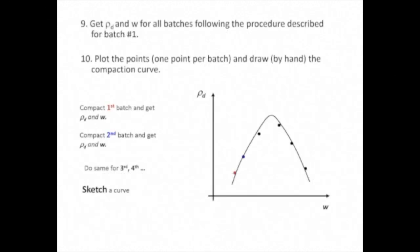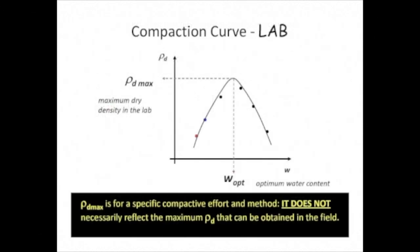We must perform the compaction procedure for all batches prepared. Thus, if we have 6 batches, we will end up with 6 points with known coordinates: water content and dry density. We then create the compaction curve by plotting our points and drawing a best-fit curve by hand. It is important that you do not simply join the points with lines. The compaction curve is unique for a given soil type, method of compaction, and applied compactive effort.